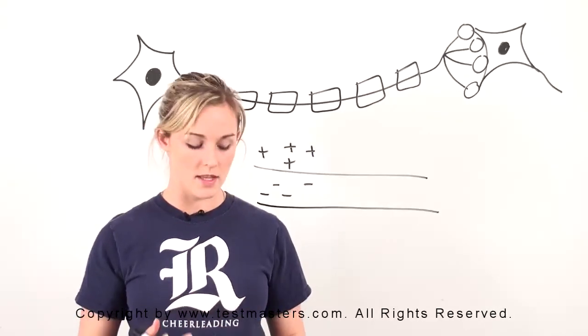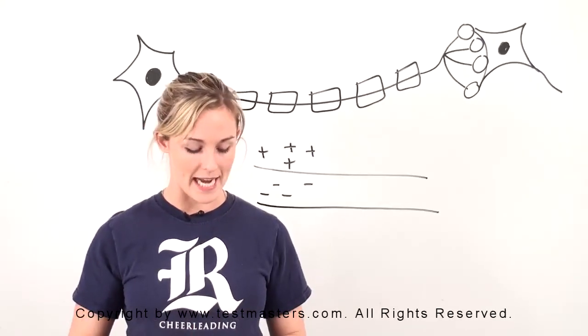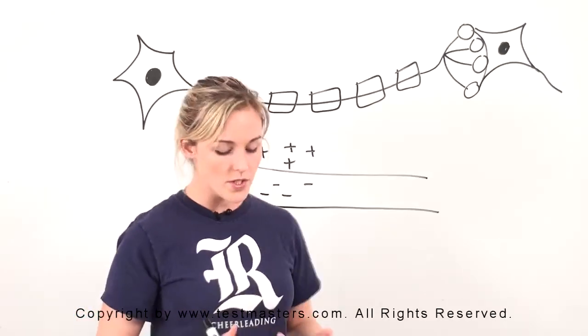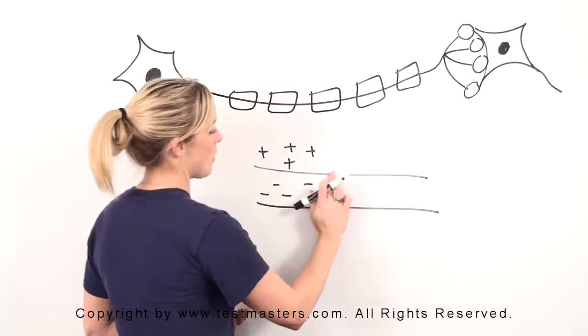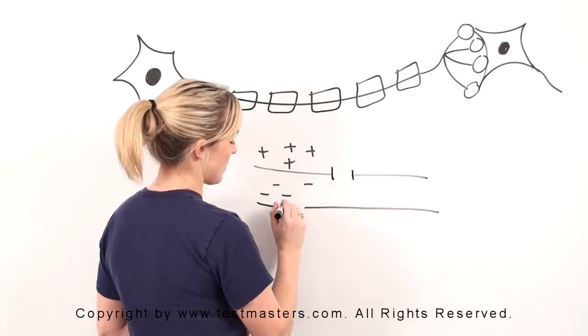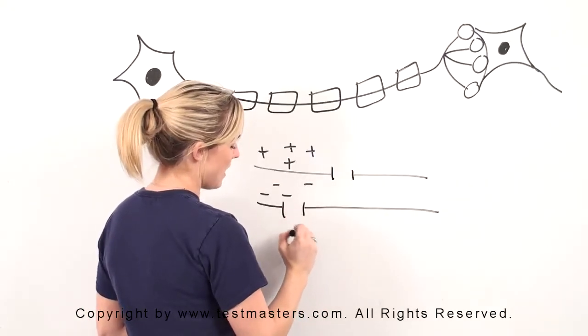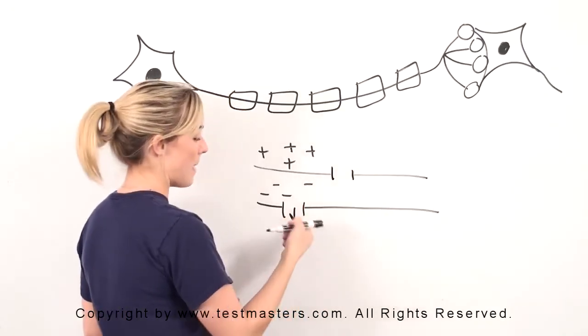There are no sodium channels here. Most of this is actually done through potassium channels. What happens is you've got these little things called leak channels, which look like this, and they're pretty much always open, and they allow positives to come out of here.